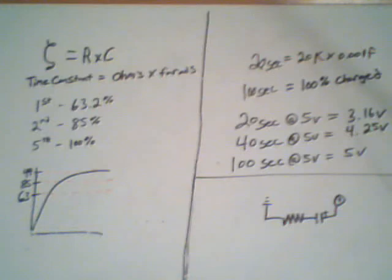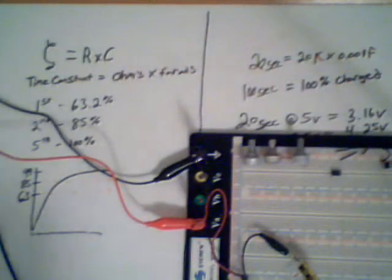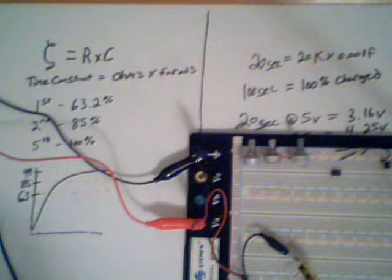Alright, now let's actually get into the actual circuit and see the voltage change. Our time constant will be, with the circuit that I got set up here, I got a 20k ohm resistor and a 1000uF capacitor.